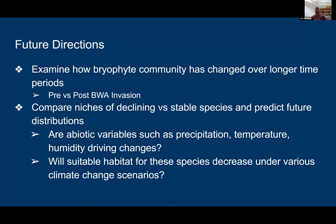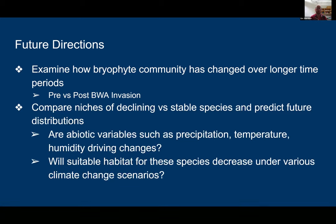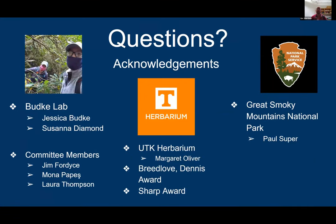However, my data doesn't directly test that hypothesis. For future directions, I'd like to examine how bryophyte communities changed over longer periods — pre- versus post-balsam woolly adelgid invasion — using herbarium specimens. I'd also like to compare the niches of declining versus stable species to determine future distributions and identify important variables outside those already tested, as well as examine how suitable habitat will change under various climate change scenarios.